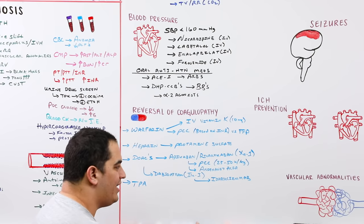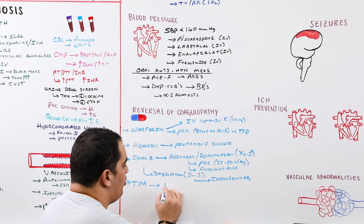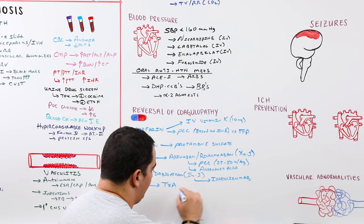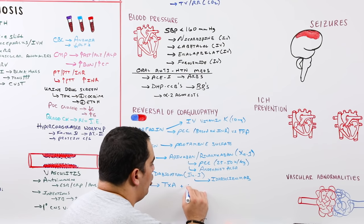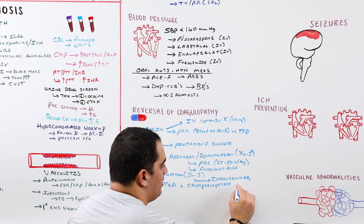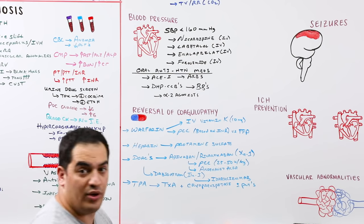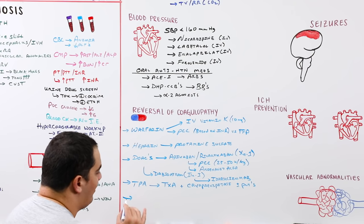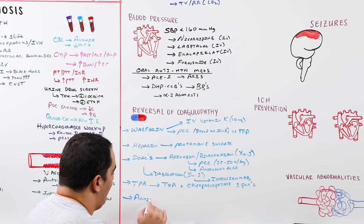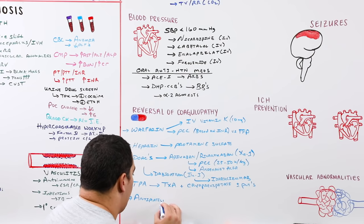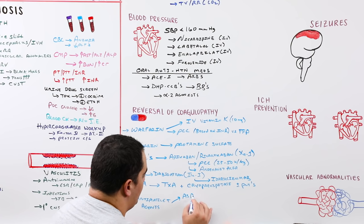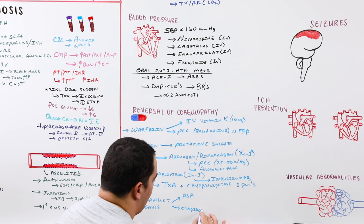For TPA, stop the infusion and give tranexamic acid (TXA) — 1 gram bolus then possibly another gram 8 hours later — and cryoprecipitate up to 10 units, plus or minus platelet transfusion.